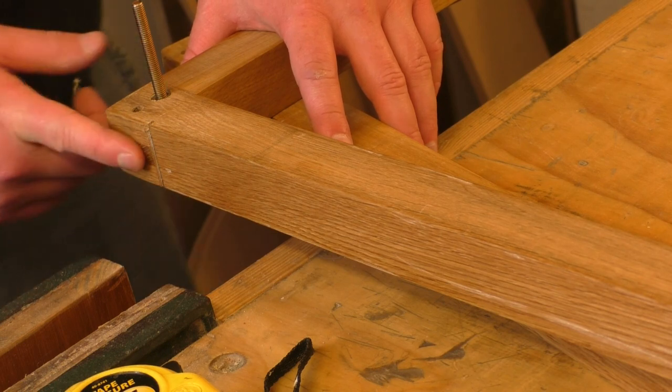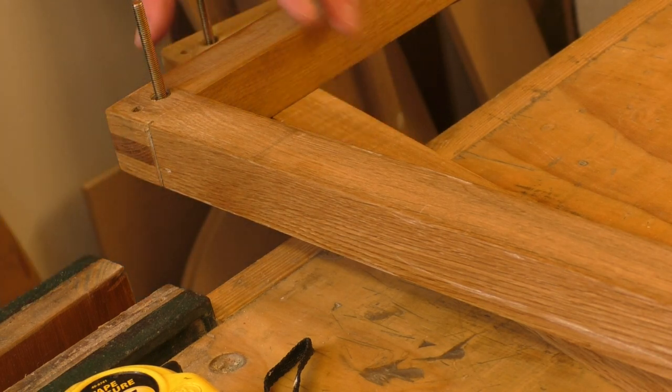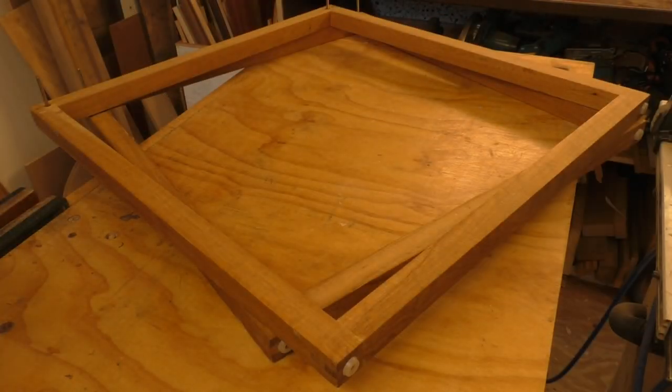There are bridle joints on the top of the table frame too, but those ones aren't visible when the table is assembled because the tabletop slots over them. So having thought this through, I think I've got two options.